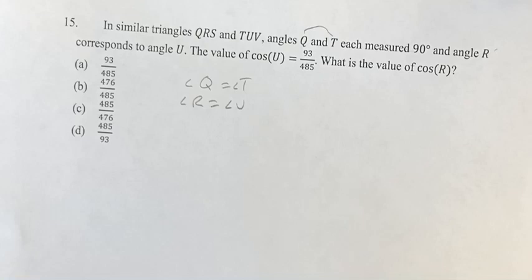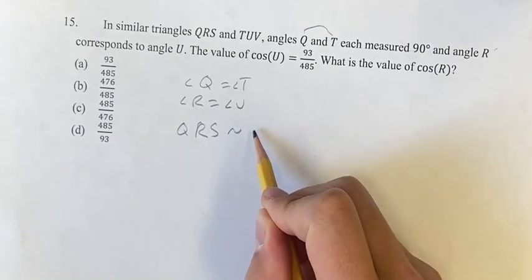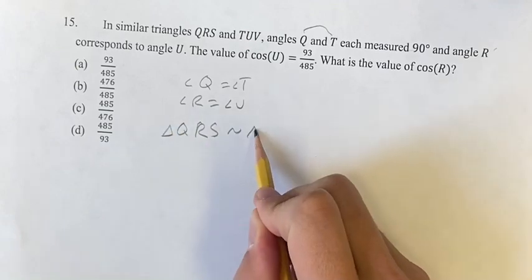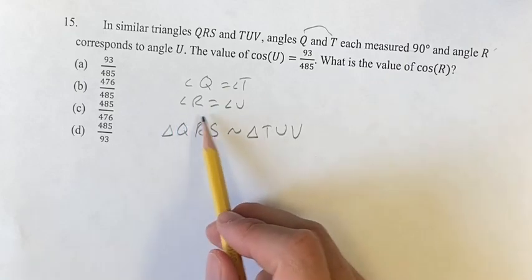Write that out right there. This means that triangle QRS is similar to triangle TUV. And since these angles are corresponding, that means their angles are equal. So Q is equal to T,